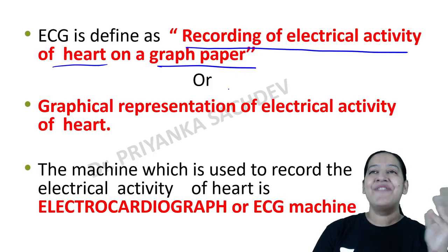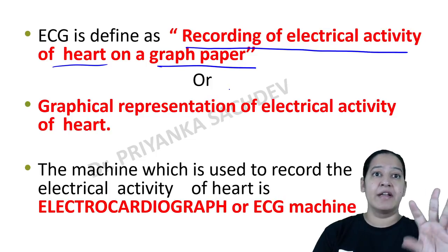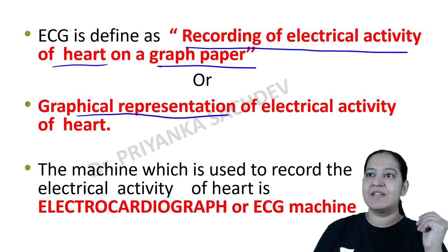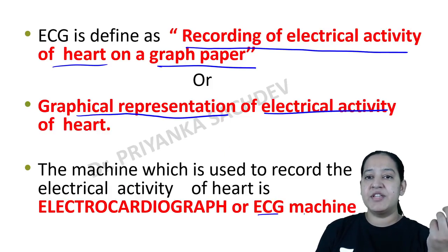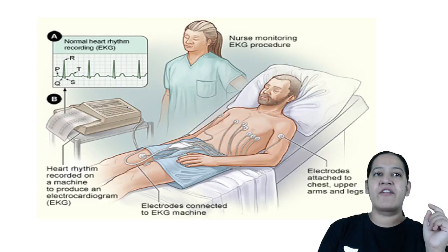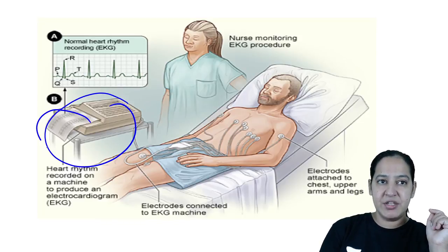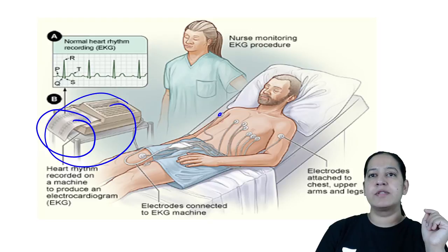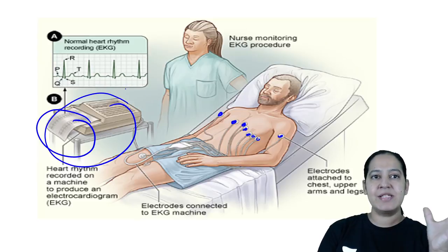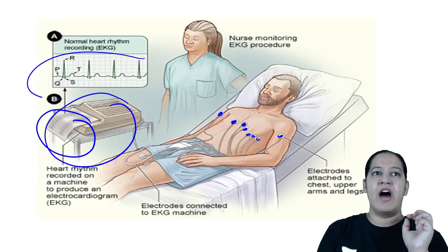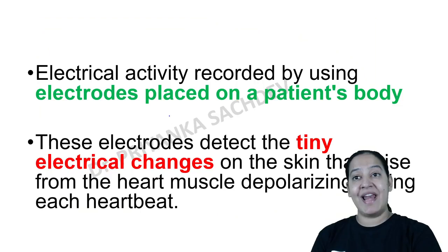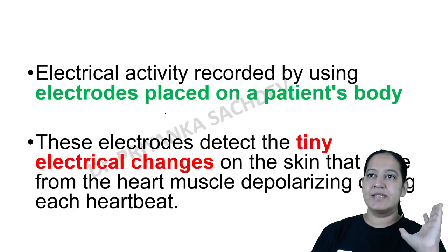We are recording the electrical activity of the heart on a graph paper — it is a graphical representation of the electric activity of the heart. The machine used to record this is known as the ECG machine or electrocardiograph machine. The electrodes are placed on the skin, on the body surface of the patient, and the electrical activity is drawn on the graph paper.